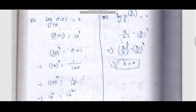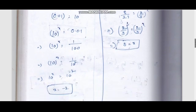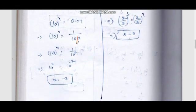Next bit. This is the important bit. Log 0.01 to the base 10 is equal to x. First, 0.01 is equal to 1 by 100, which is 1 by 10 square. So 10 power x equal to 1 by 10 square. 10 power x equal to 10 power minus 2. Therefore x equal to minus 2.